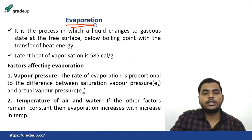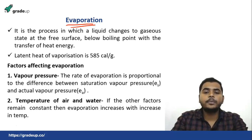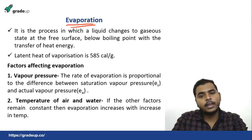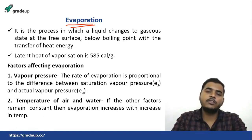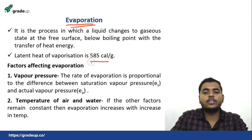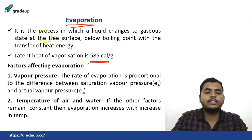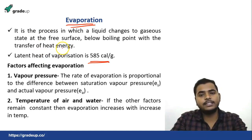Now, coming to our next component — evaporation. Evaporation is a process in which liquid changes to gaseous form and it is a surface phenomenon, unlike boiling which occurs throughout the whole mass of the liquid. Evaporation occurs below the boiling point — below 100 degrees Celsius — and goes on occurring at any temperature, with the transfer of heat energy when heat energy is absorbed by the water body. The latent heat of vaporization is 585 calories per gram, meaning to convert 1 gram of liquid to vapor state we require 585 calories of energy.